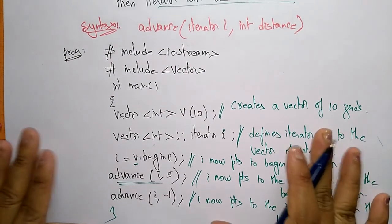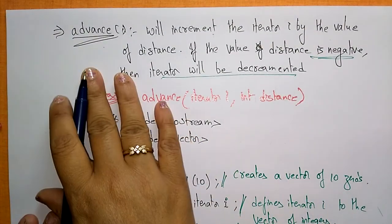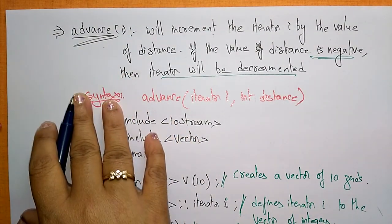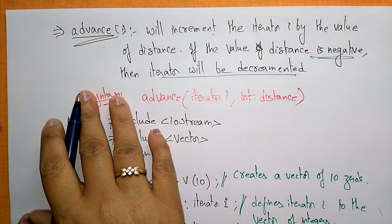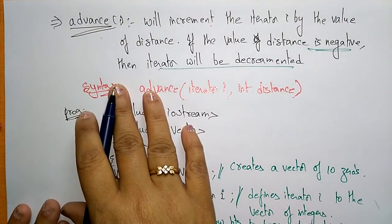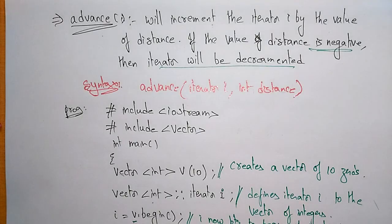This is about the advance operation — one of the iterator operations in the Standard Template Library. In the next video I will explain the other different operations: distance, next, previous, begin, and end. Thank you.